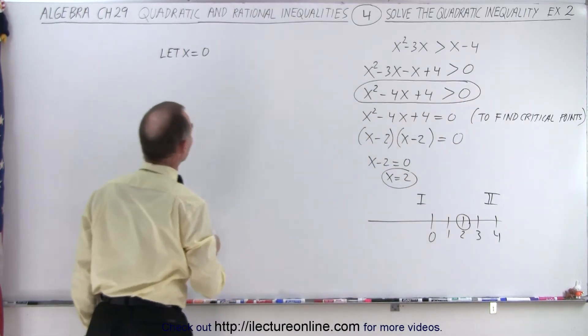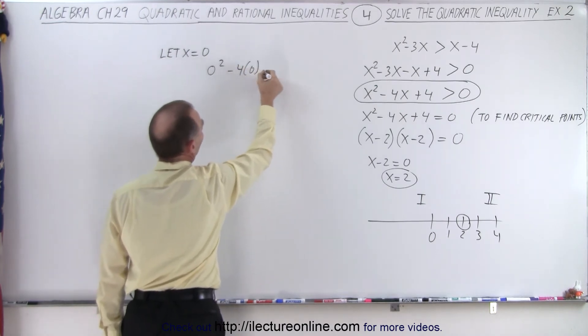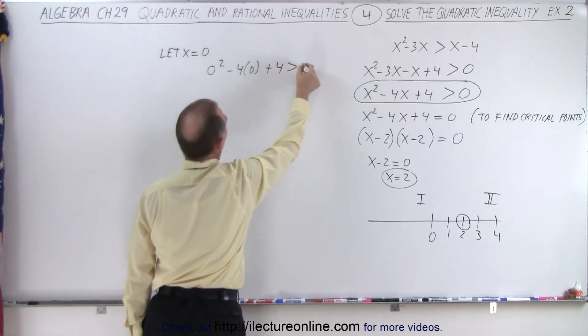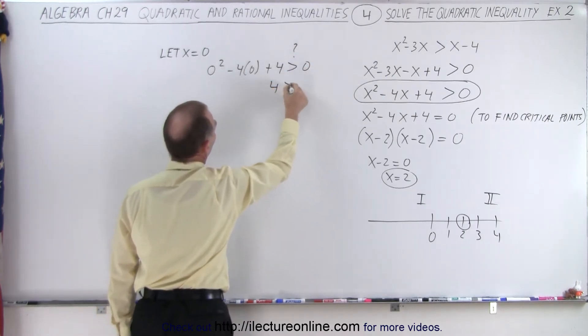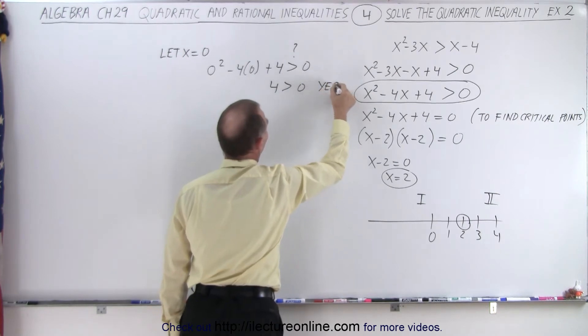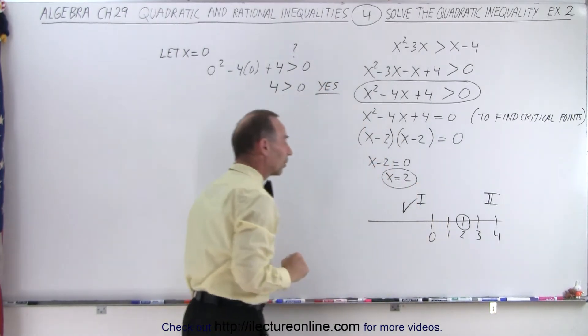And we'll plug that into the original inequality. Let's go over here and plug it into here. Let's see if that is correct when x equals 0. So we have 0 squared minus 4 times 0 plus 4. Is that greater than 0? So this is 0, this is 0. So we have 4 greater than 0, and the answer is yes. That means the region on the left, region number 1, satisfies the inequality.